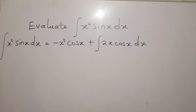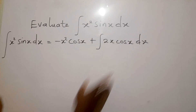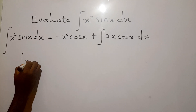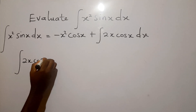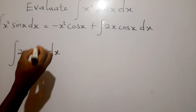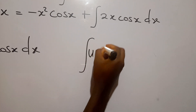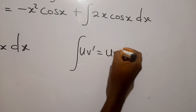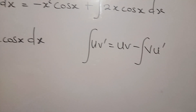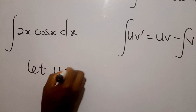You can see that another integral has come in which we need to solve by parts again. For the integral of 2x cos x dx, we apply integration by parts: the integral of u v prime equals u v minus the integral of v u prime. So we let u be equal to 2x.